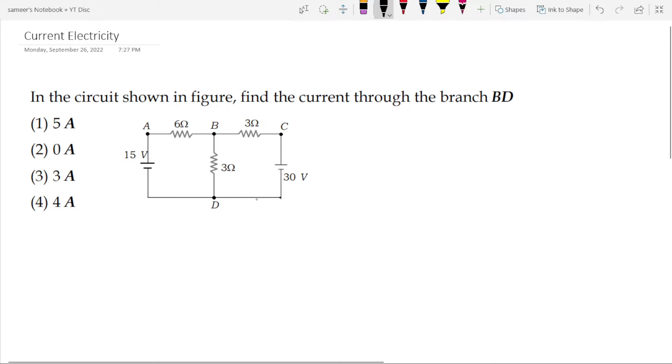what we do is generally we connect the common terminal of these 2 cells to earth. If you connect this point to earth, the potential of this point becomes 0.